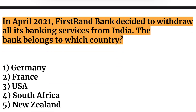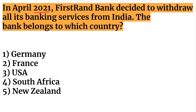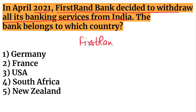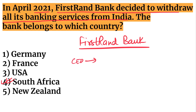In April 2021, FirstRand Bank decided to withdraw all its banking services from India. FirstRand Bank belongs to South Africa. Its CEO is Alan Pullinger and its headquarters is in Johannesburg, South Africa.